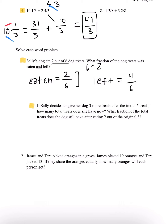So part A asks us, if Sally decides to give her dog 3 more treats after the initial 6 treats, how many total treats does she have now? Initially we have 6, but if she gives her dog 3 more, if we add this, we have 9. So we have 9 total treats now.